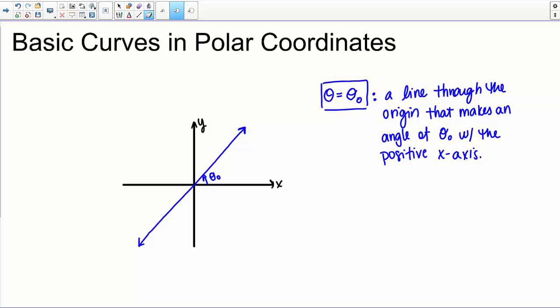Now one other case you could possibly see in regards to this line, theta equals theta 0, is the case in which we have theta equals theta 0, but we're restricting ourselves to R values greater than or equal to 0. And in that case, things are going to be very similar, but you're only going to have the one side of this line for which the R values are positive.